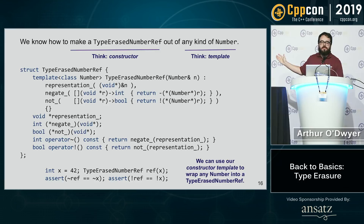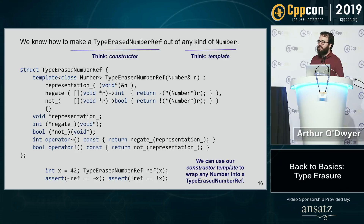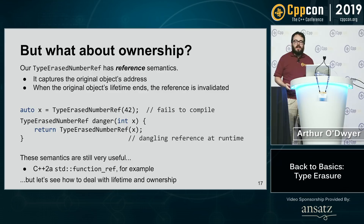At this point we have something I would call type erasure. If you're familiar with the function_ref proposal, this is very similar — just a number_ref. I decided to erase operations that were not function calls just to show you it can be done.